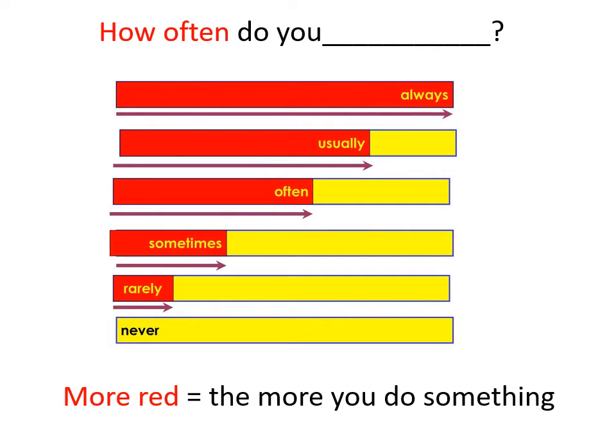Theo như sơ đồ dưới đây, chúng ta có: always, usually, often, sometimes, rarely, and never.